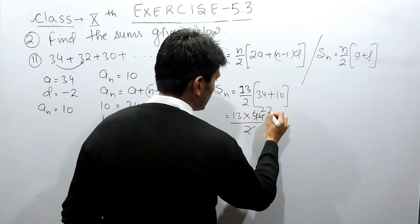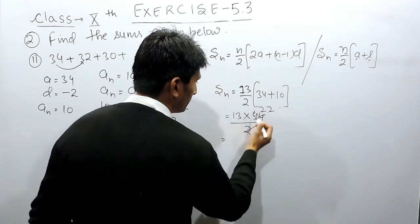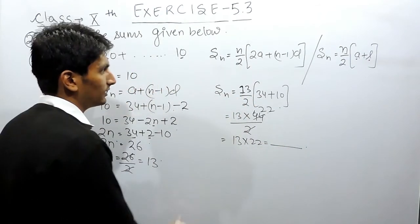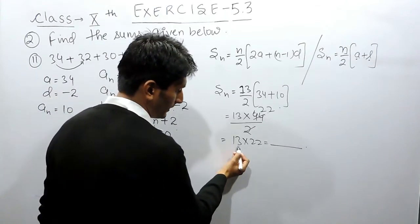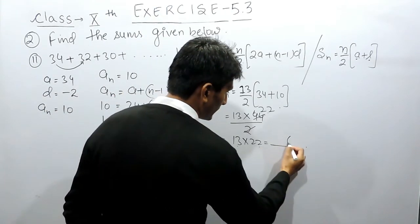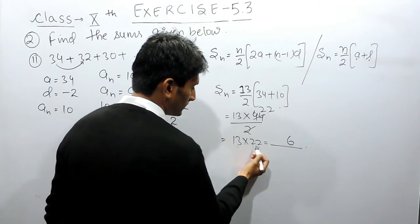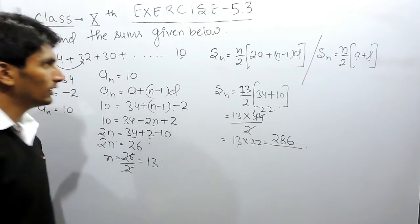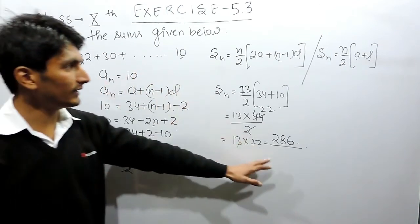This becomes 13 × 44 ÷ 2, which equals 13 × 22. Calculating: 13 × 2 = 26, carry 2, then 13 × 2 = 26, giving us 286. So the sum of this AP is 286.